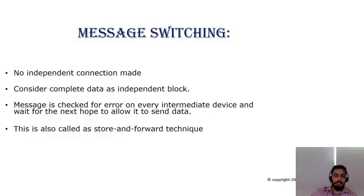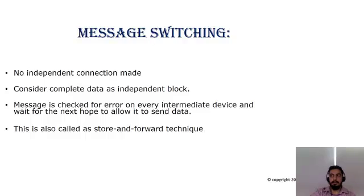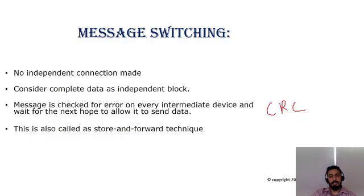In message switching, the data traversing through different devices in the network is checked for errors at every single device, just to make sure it is error-free. CRC — Cyclic Redundancy Check — is used as the error detection mechanism to find out if the data has been corrupted on the path or if it remains error-free.